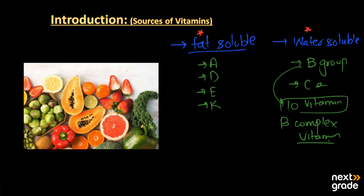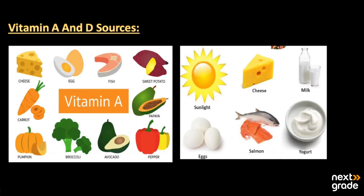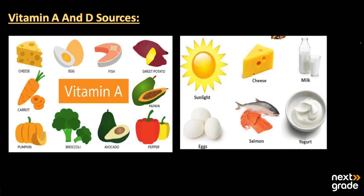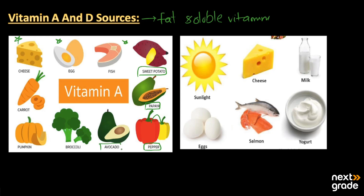Now let's look at different sources. We can gain vitamins from all fruits as well as from many vegetables. The first vitamins we will discuss are Vitamin A and D, both of which are fat-soluble. The main sources of Vitamin A include cheese, eggs, fish, sweet potatoes, papaya, pepper, avocados, broccoli, pumpkin, and carrot.